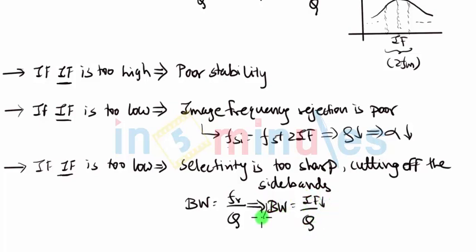If IF is very low, then the bandwidth might be smaller than the desired value of 2FM. In that case, you can see that if the bandwidth is too low, it may happen that my desired signal